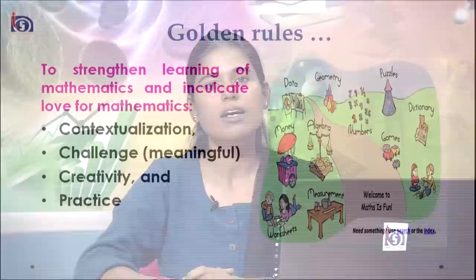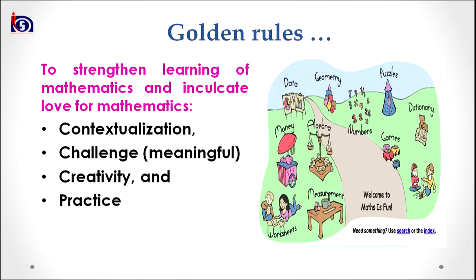Here are some golden rules for strengthening learning of mathematics and inculcating love for mathematics. After going through the content of this lesson, there are four things to keep in mind when designing learning experiences in mathematics. The first is to contextualize mathematical activities. The second is to pose activities in a challenging manner so that children can enjoy and have fun in mathematics. Third, we should promote creativity in performing mathematical tasks or activities. The fourth and final thing is to promote practice in mathematics — practice will sharpen the mathematical skills of children.